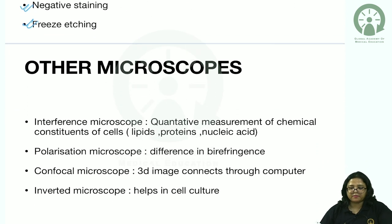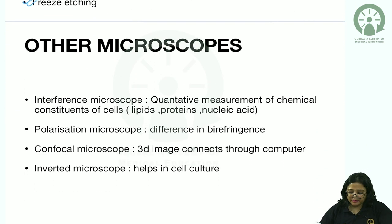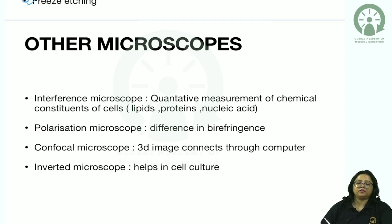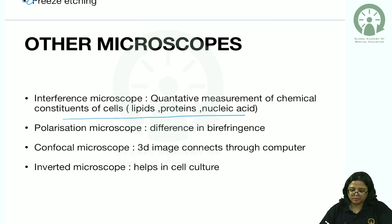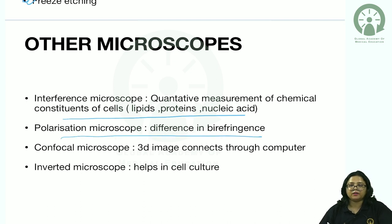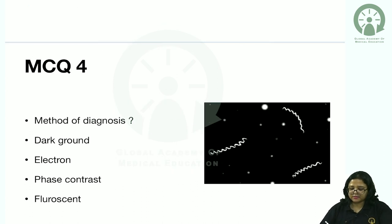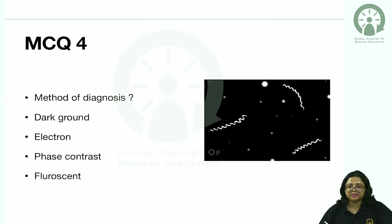Other types of microscopes: interference microscope for quantitative measurement of chemical constituents of cells (lipids, proteins, nucleic acids); polarization microscope based on birefringence; confocal microscope using a computer for 3D imaging; and inverted microscope used in cell culture.